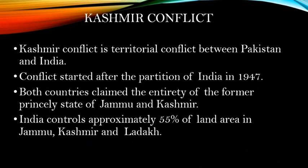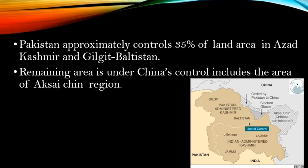Both countries claim the entirety of the former princely state of Jammu and Kashmir. In terms of land distribution by percentage: India controls approximately 55% of the land area, covering Jammu, Kashmir, and Ladakh. Pakistan controls approximately 35% of the land area, covering Azad Kashmir and Gilgit-Baltistan. These two areas are separated by the Line of Control, abbreviated as LOC. The remaining 10% is under China's administration, which is the area of Aksai Chin.